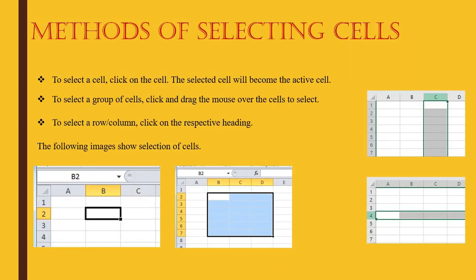Methods of selecting cells: you can click on a cell to select one active cell. You can click and drag to make a rectangular coverage and select a group of cells. You can click on a row or column heading to select that entire row or column. If you click on the small triangle at the corner, all cells in the worksheet will be selected together.